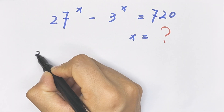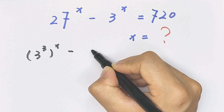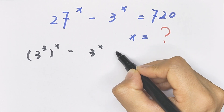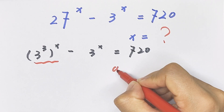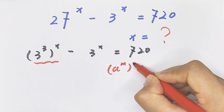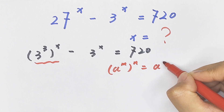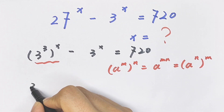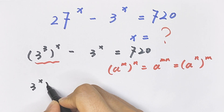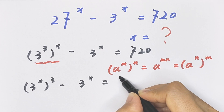27 is equal to 3 cubed, so (3³)^x minus 3 to the power of x equals 720. We know that a to the power of m, bracket to the power of n, equals a to the power of m times n — we multiply the powers. So here it becomes 3 to the power of 3x minus 3 to the power of x equals 720.